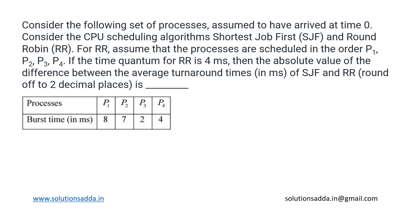Based on process scheduling, we have been given four processes P1, P2, P3, and P4. The scheduling algorithms used are Shortest Job First and Round Robin. For Round Robin, the initial order of execution is P1 to P4 with a time quantum of four milliseconds. We need to determine the absolute difference between the average turnaround times for these processes using both scheduling algorithms.